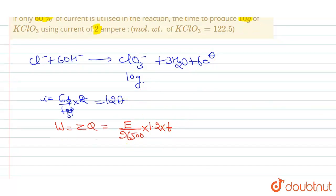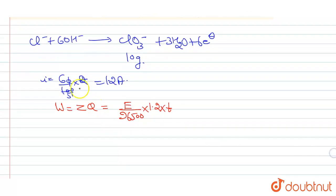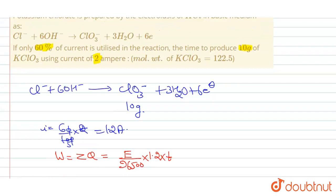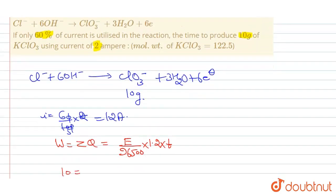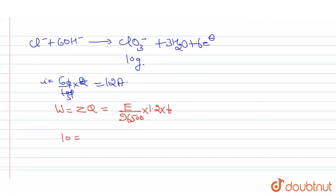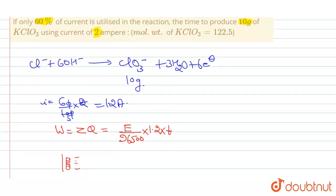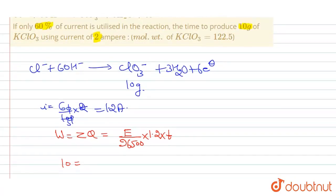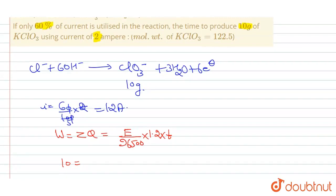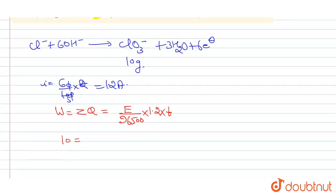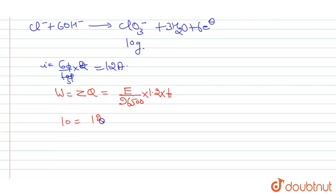What is w? We have given 10 gram of KClO3. Equivalent weight of KClO3: equivalent weight is molecular weight upon n factor. Molecular weight is 122.5, molecular weight is 122.5 upon n factor is 6, divided by 96500 into 1.2 into t.